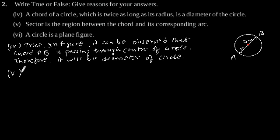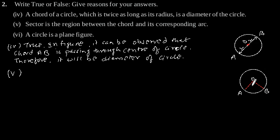Fifth: a sector is a region between the chord and its corresponding arc. This statement is false, since a sector is the region between the arc and the two radii joining the center to the end points of the arc. For example, in this figure, the region OAB is the sector of the circle.